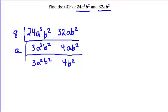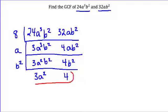Now I'll focus on the b's. I have b squared and b squared. Well, the common factor there is b squared, so I'm left with 3a squared and 4. So just like in our previous example, these two numbers or two monomials at the bottom are relatively prime.